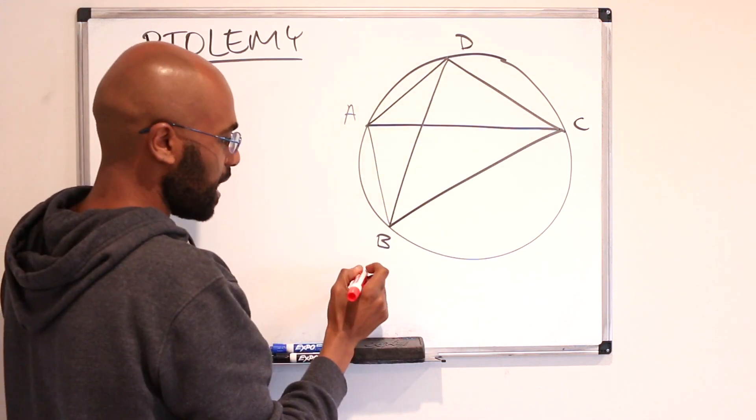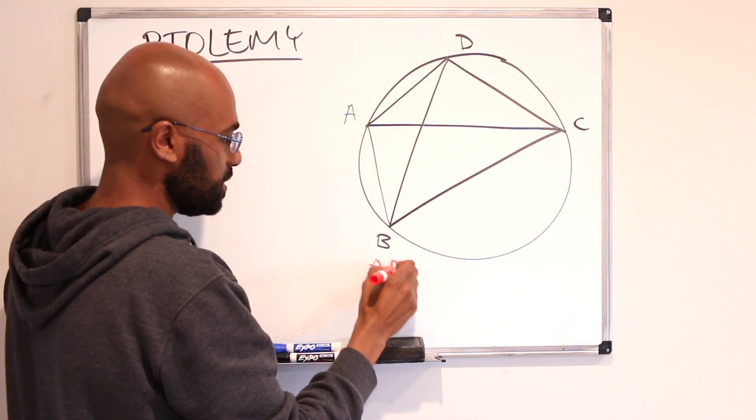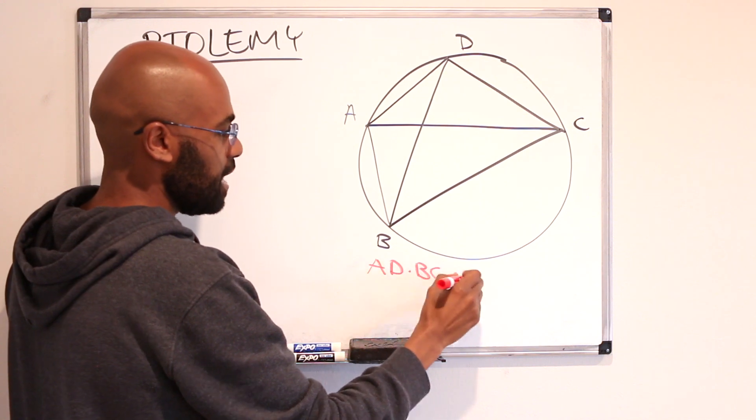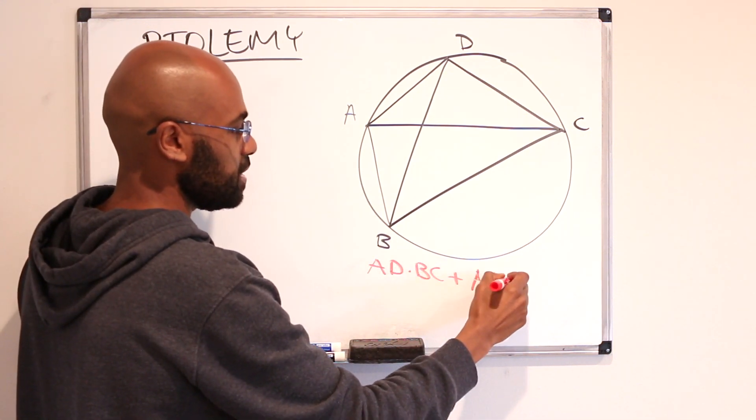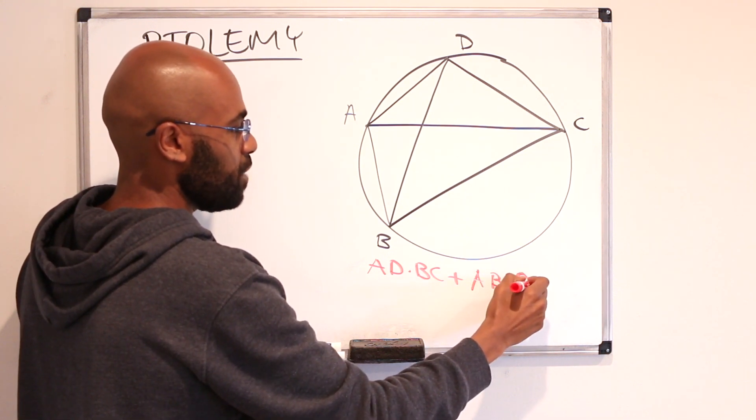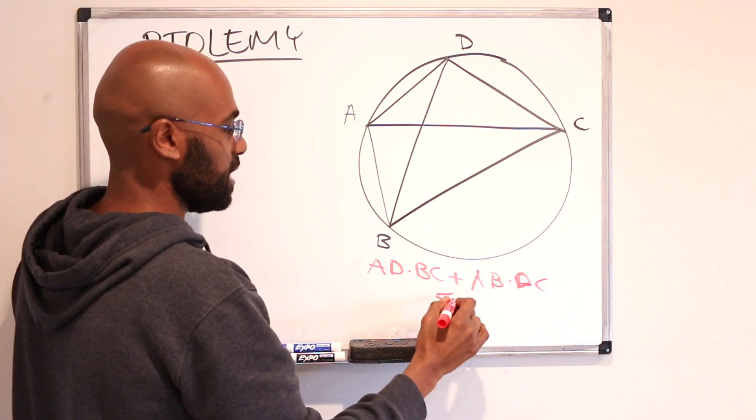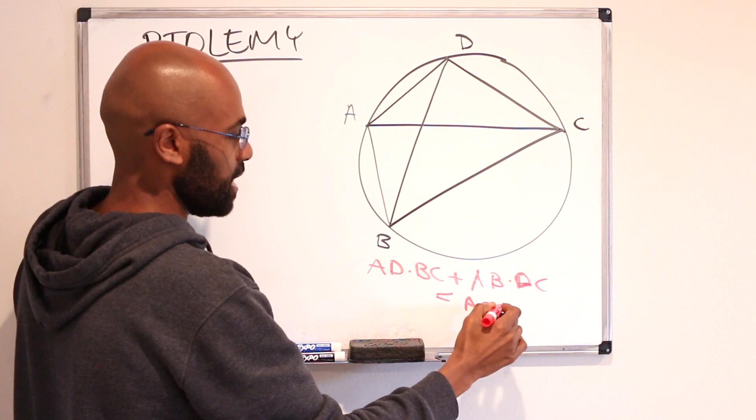If you take the opposite sides AD and BC and multiply their lengths and add the product of the other opposite sides which are AB and DC, you actually get the product of the lengths of the diagonals which is AC times BD.